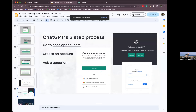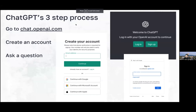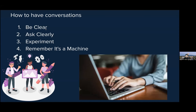Here are some tips for having good conversations with ChatGPT. First, be clear — make sure to use simple, straightforward words. Ask clearly when you want something and give specific details or examples to help it understand. Don't be afraid to experiment — if it gives you something you're not looking for, you can correct it and say 'I'm looking for this instead,' and it will adjust. Remember it's a machine, so it might not always understand perfectly. If you don't get the response you want, just keep asking and be specific.